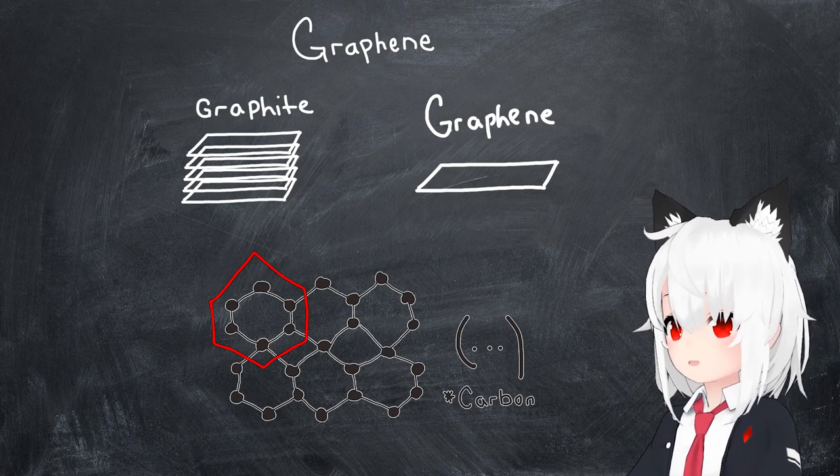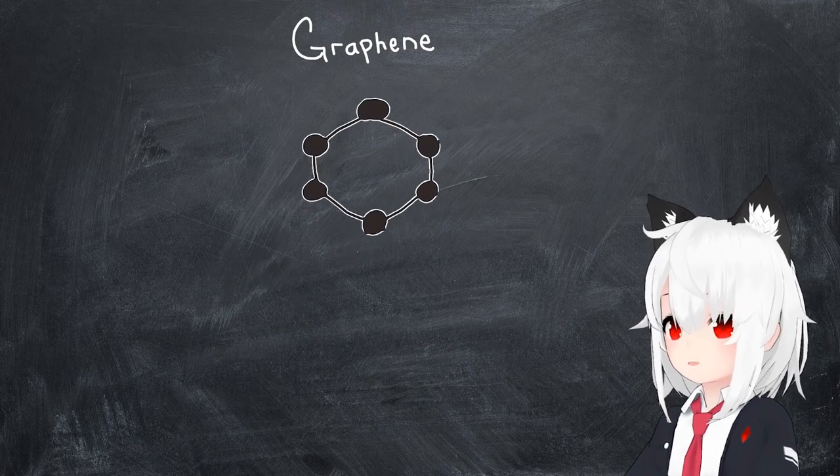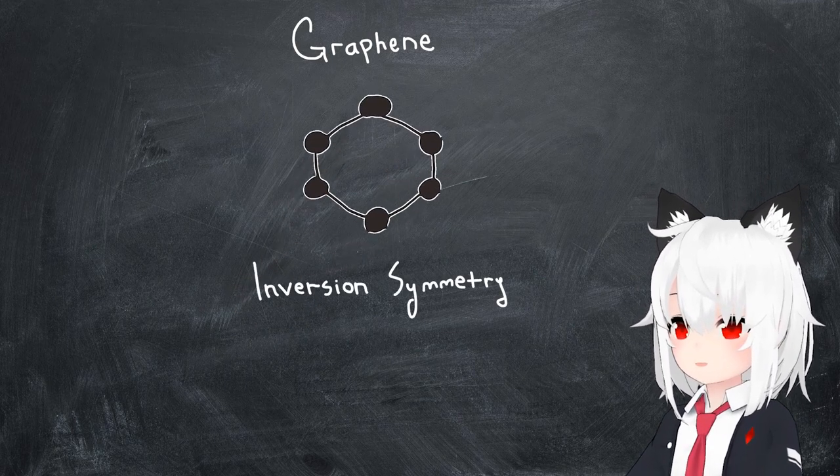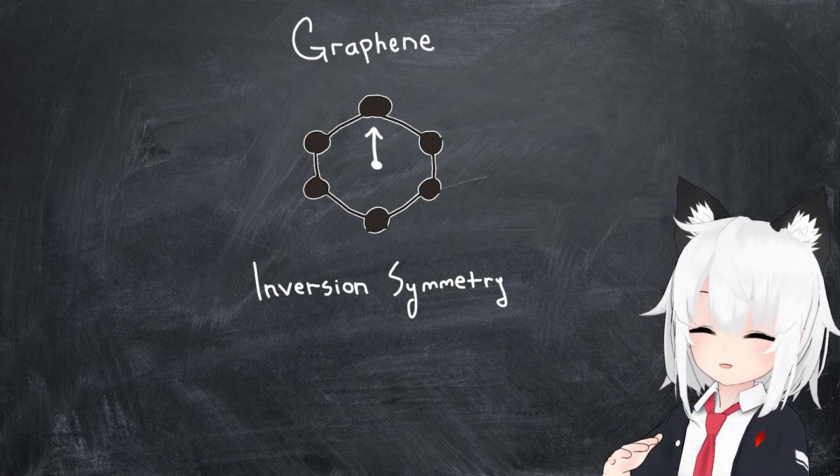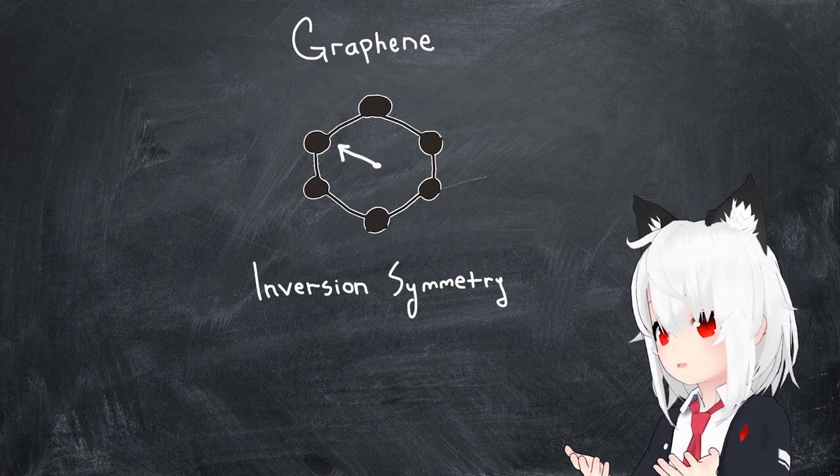Looking at an individual unit cell of its lattice makes it fairly straightforward to see that graphene actually does obey inversion symmetry, since performing the inversion operation would exchange carbon atoms, bringing the lattice right back to itself.